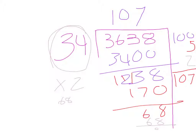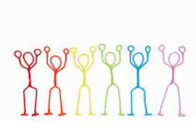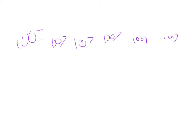That's how many unicorns each person gets. Now everyone's happy. We each get 1,007 unicorns.